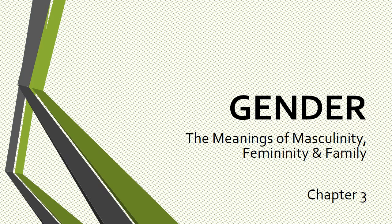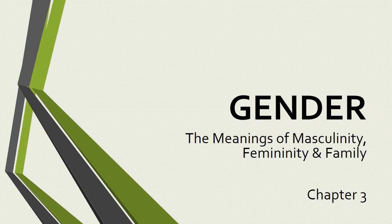Welcome to chapter 3, talking about gender — the meaning of masculinity and femininity and the family. In the field of sociology, we sometimes refer to masculinity in the plural: masculinities. There are different expressions. For some expressions of masculinity, we see four-wheelers and hunting; in other places, it may be a specific sport. With femininities, it's very similar — femininity is expressed in different ways across cultures. We'll look at various meanings of those terms and their relationship with the family.